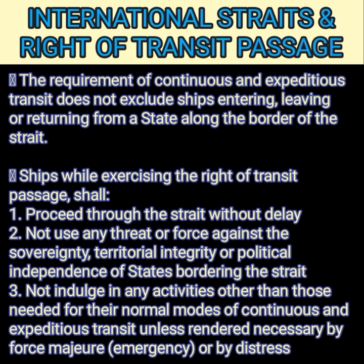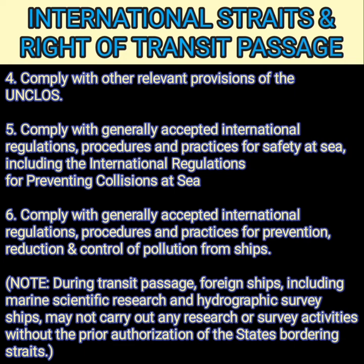Ships while exercising the right of transit shall proceed through the strait without delay, not use any threat or force against the sovereignty, territorial integrity, or political independence of states bordering the strait. Transiting ships must not indulge in any activities other than those needed for their normal modes of continuous and expeditious transit, unless rendered necessary by force majeure or by distress. They must also comply with other relevant provisions of UNCLOS.